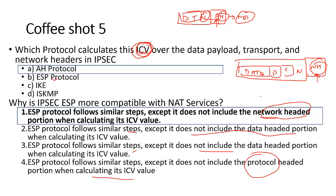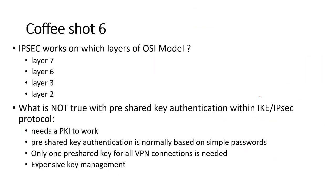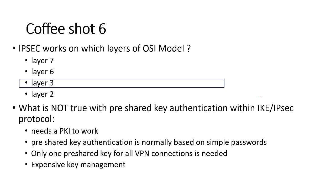IPSec works on which layer of the OSI model? Layer 7 is the application layer, layer 2 is the MAC layer, layer 3 is the network layer with IP addresses, and IP works on layer 3. Layer 6 is presentation — IPSec doesn't work there. The answer is layer 3.